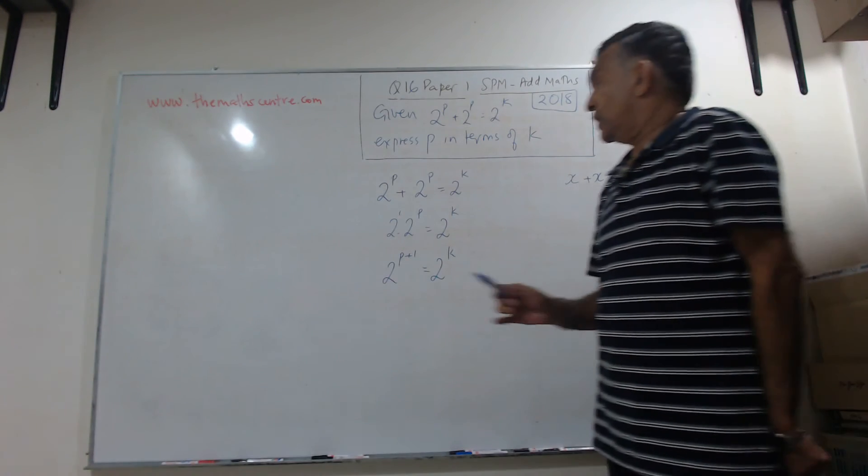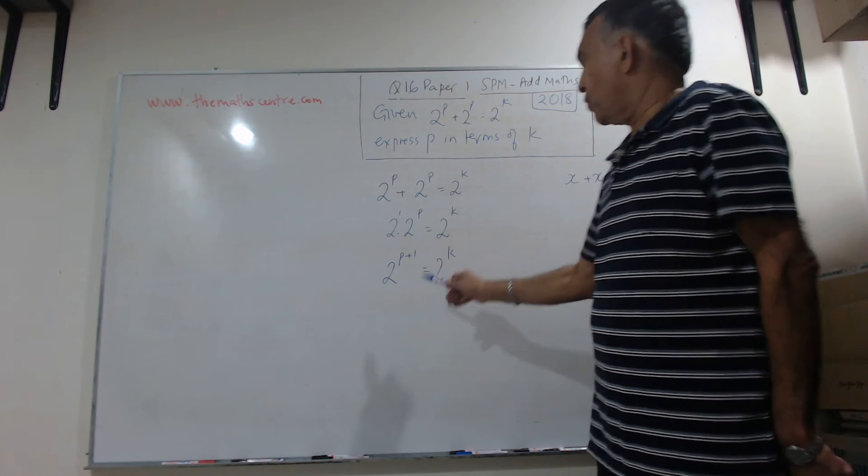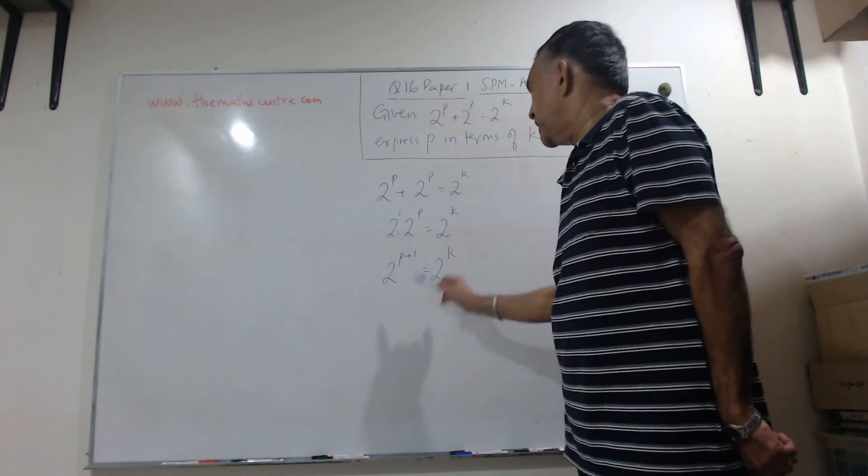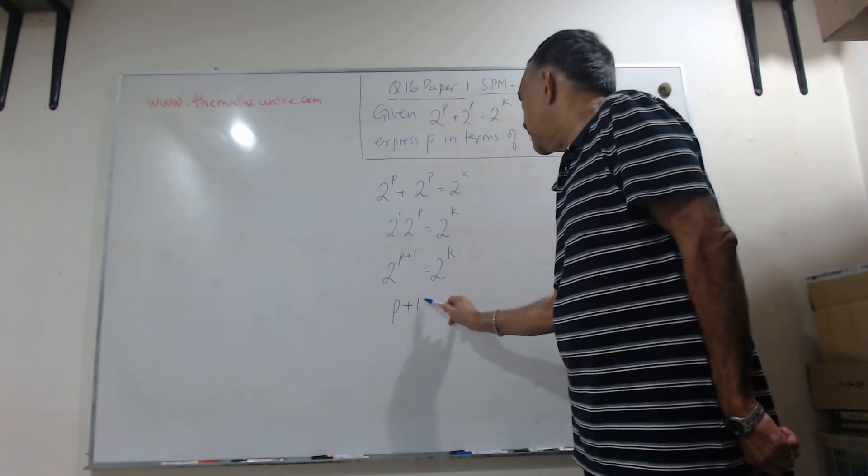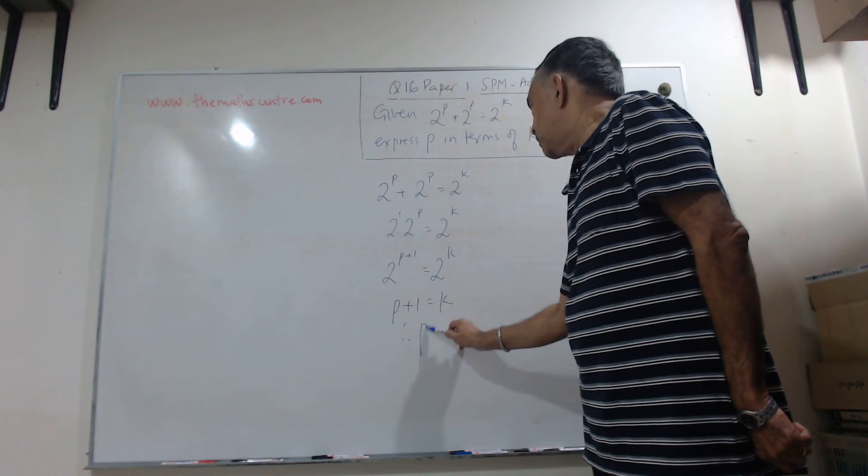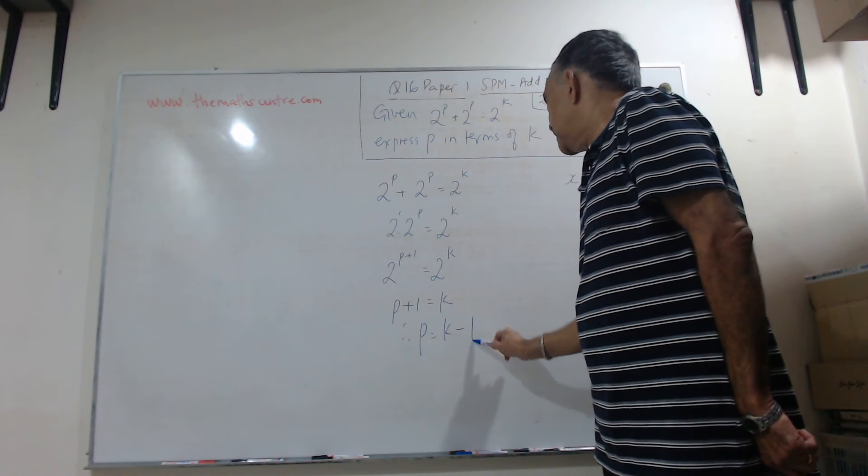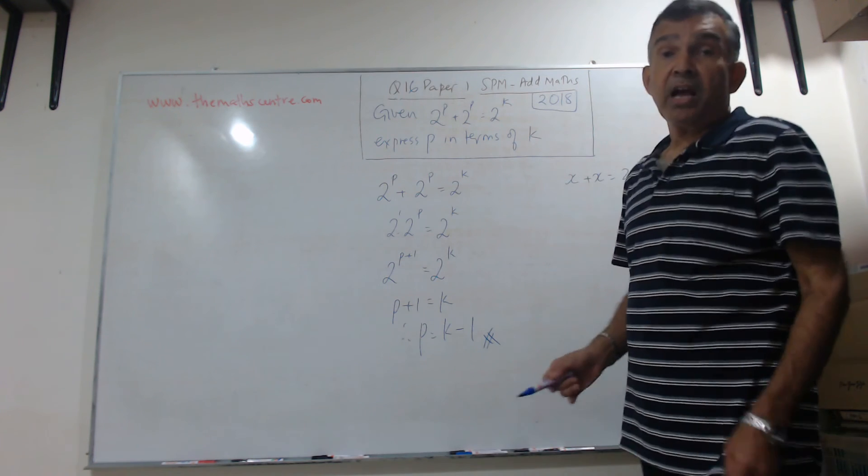Now the bases are the same, so we can write the exponents will be equal. So we can write p plus 1 equals k. Therefore, p equals k minus 1, and we are done.